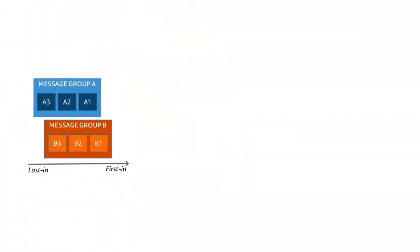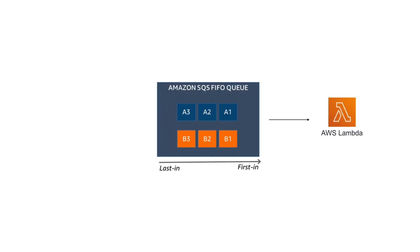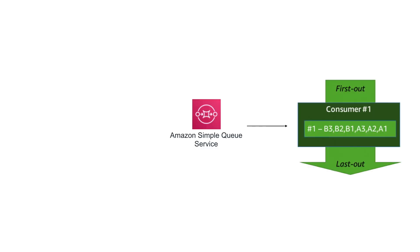Let's look at this example. We have two message groups with three items each. We submit those items to a FIFO queue and the new items will trigger a Lambda. That Lambda has a batch size of 10 for consuming items from the message queue. So the consuming Lambda function will get all six items and all items will be processed in one single batch with one function.